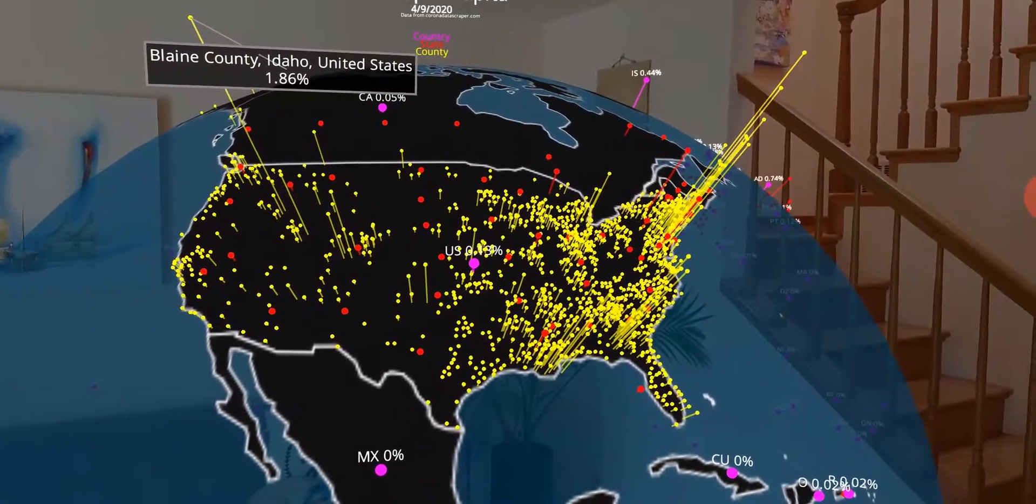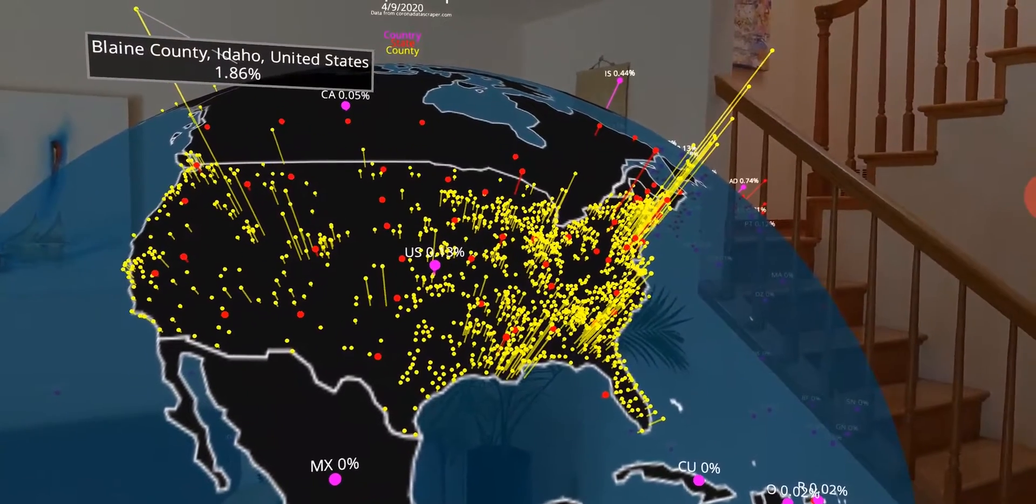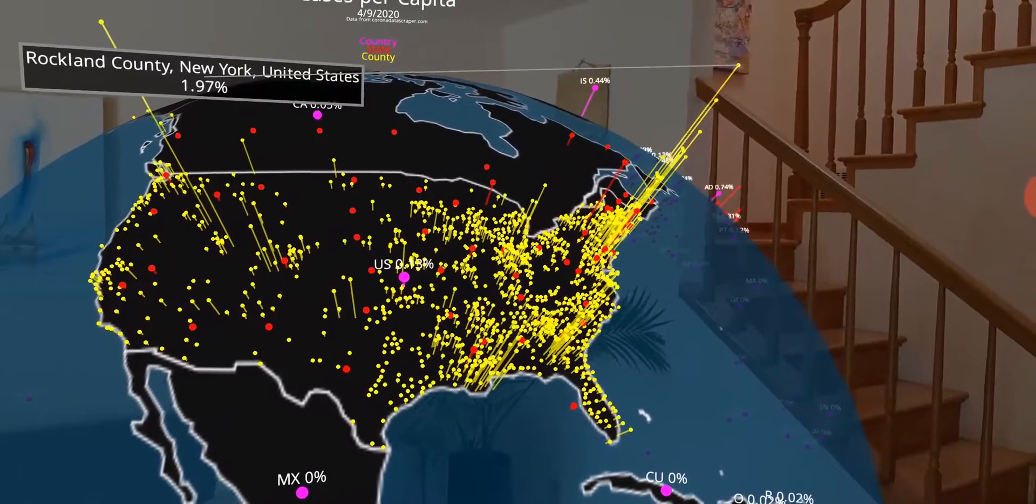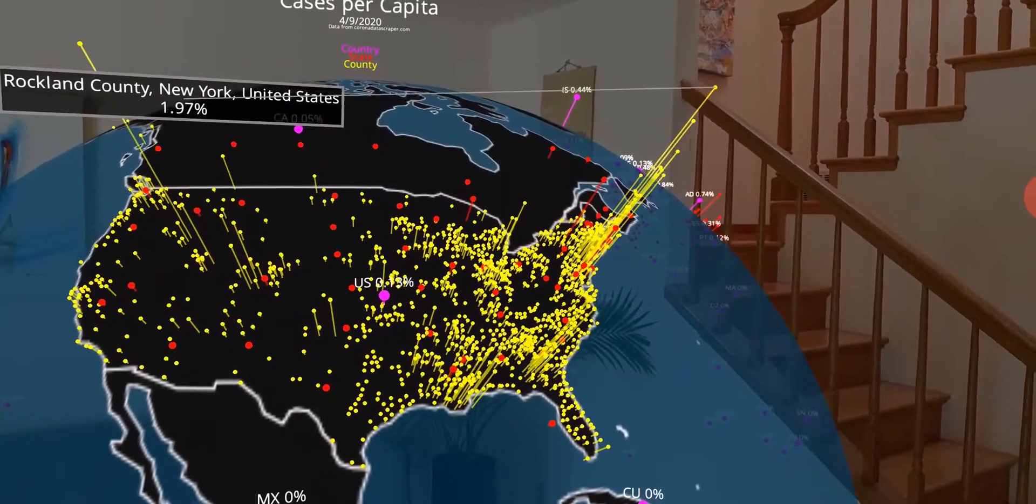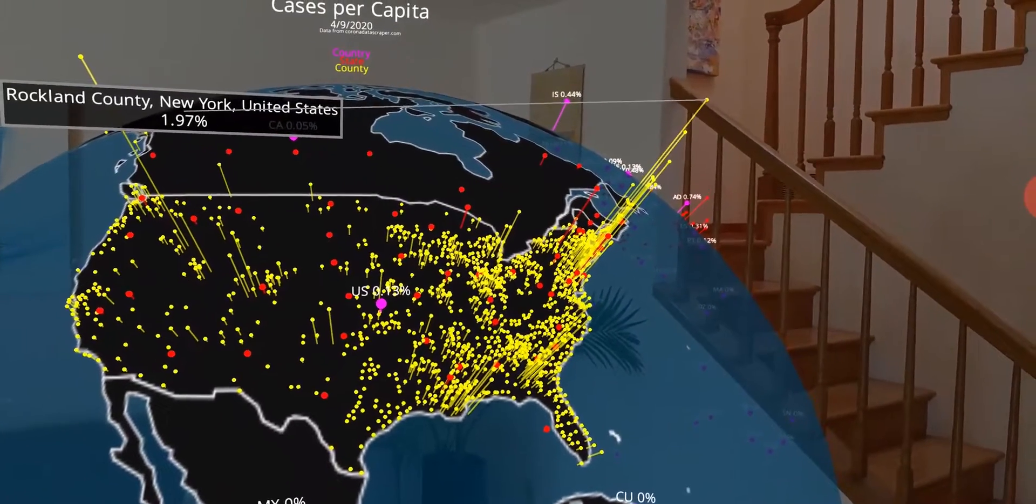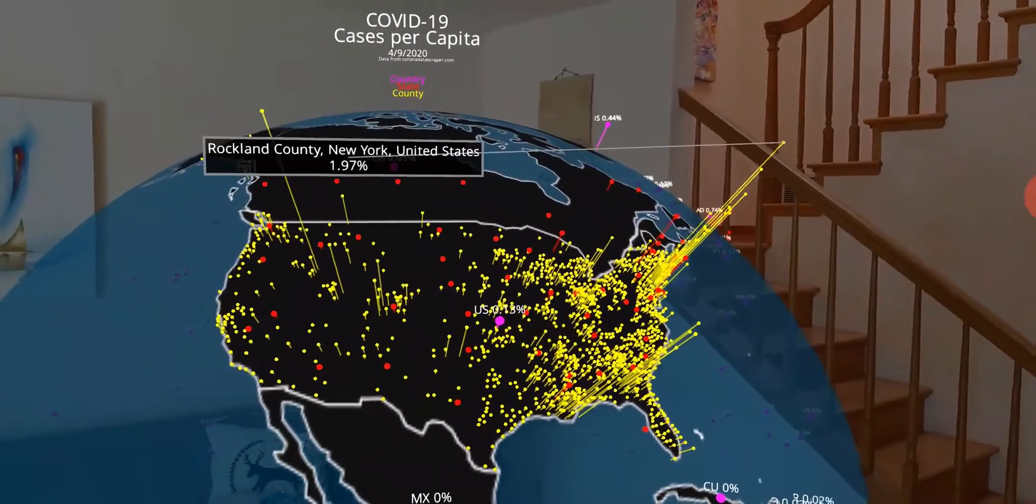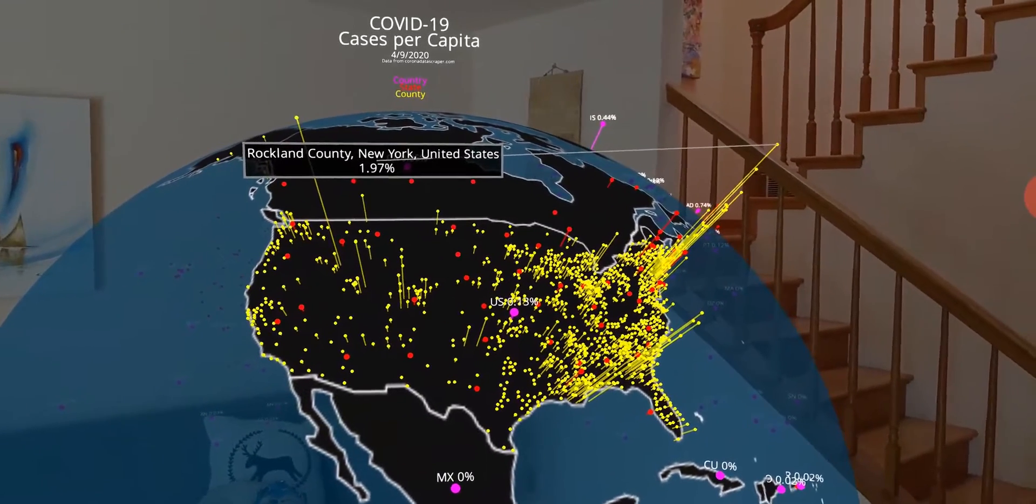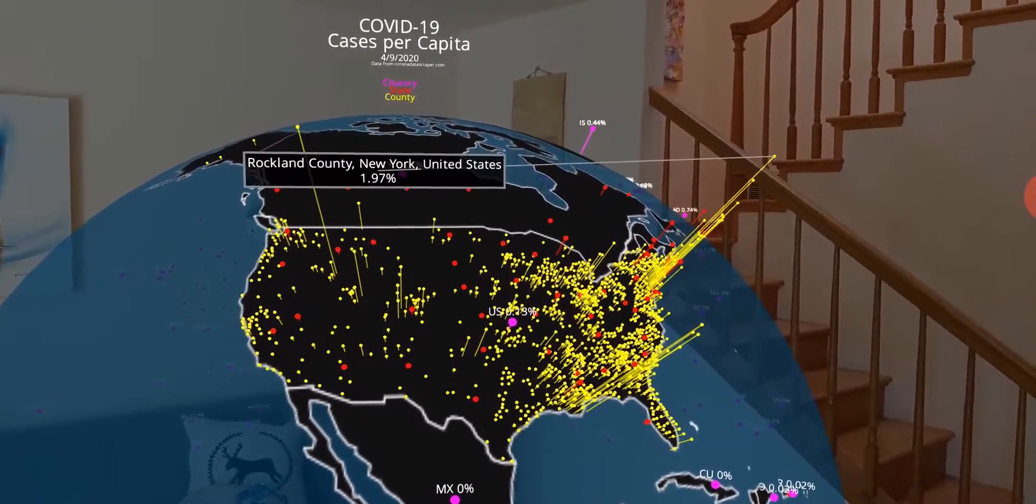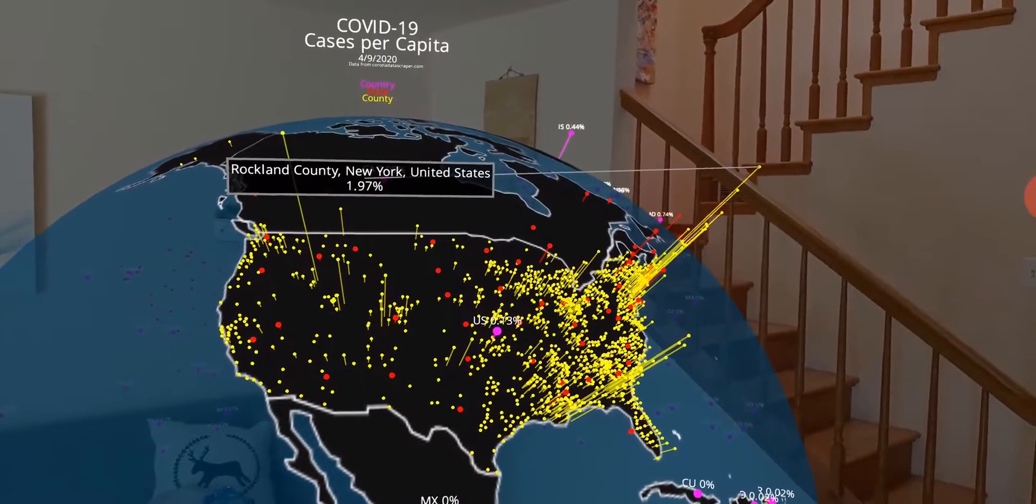Blaine County, Idaho, 1.86%. Here in New York, Rocklands County, 1.97%. And so as we start to look through, these are really the localized areas that we need to pay attention to, because it's being able to act locally that we're going to make an impact on these numbers.